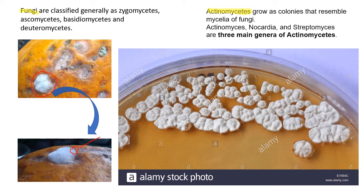Once spores land in an appropriate environment where food and nutrients are present, they can germinate into a new colony of actinomycetes. You can see that the actinomycetes colony is very firmly attached to — or half embedded into — the media. You will find it very difficult to pick the actinomycetes colony with a wire loop; you need to scrape or cut a small piece of the colony with agar.